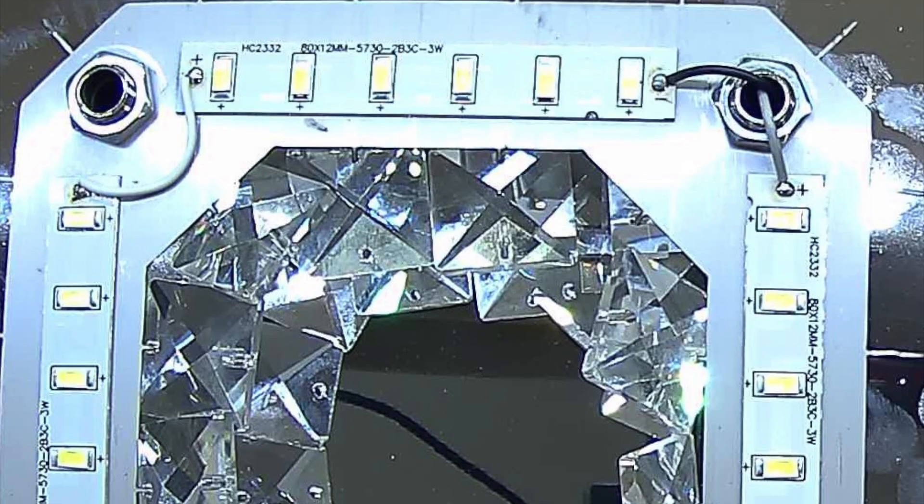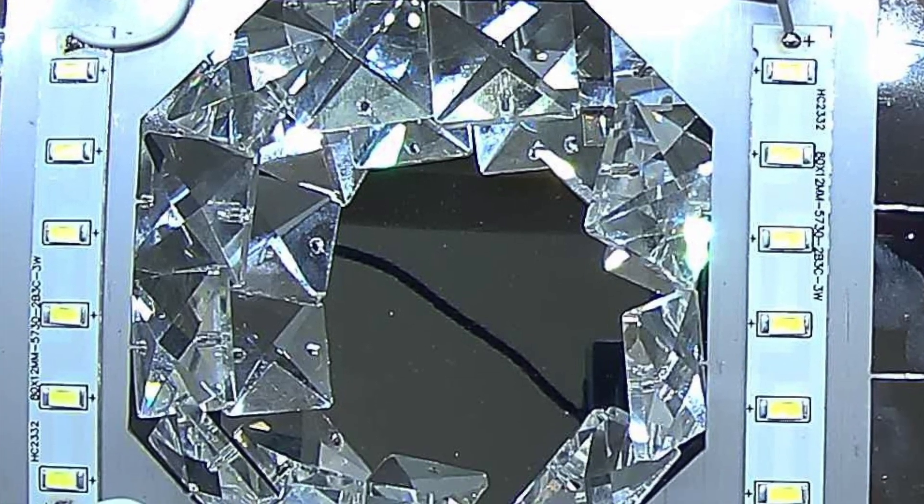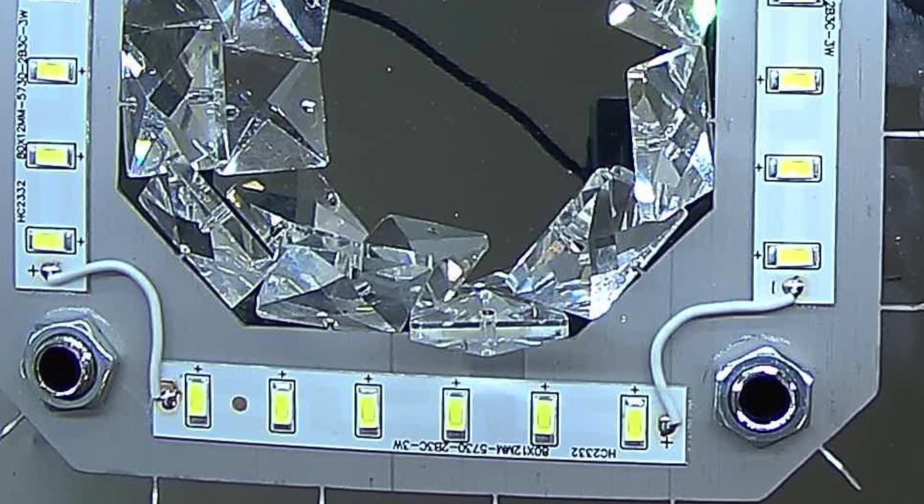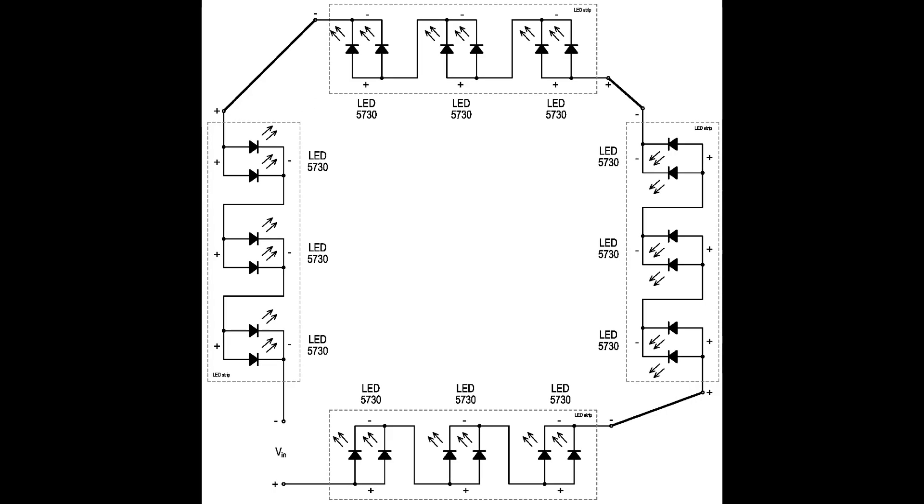In this strip with six LEDs, they are connected in pairs in parallel and the pairs are connected to each other in series. There are four strips in the light fixture and they are connected in series. We also get the calculation of the voltage inside the entire light fixture.